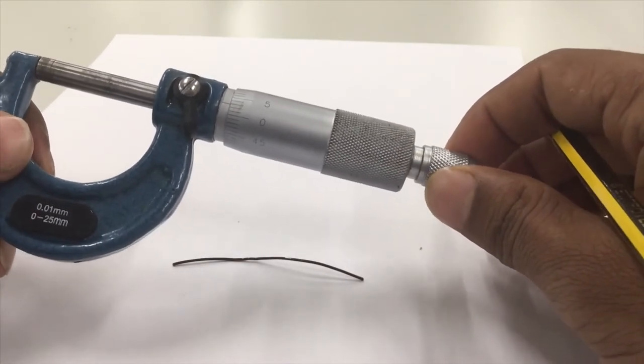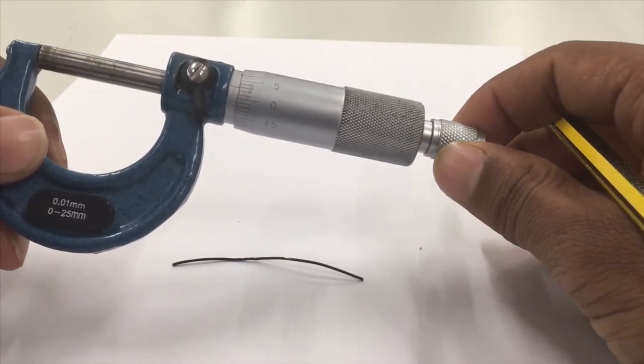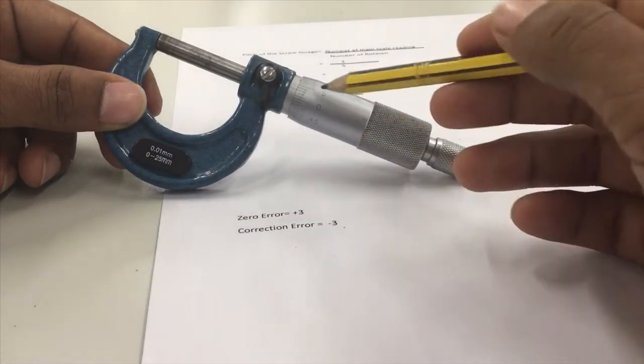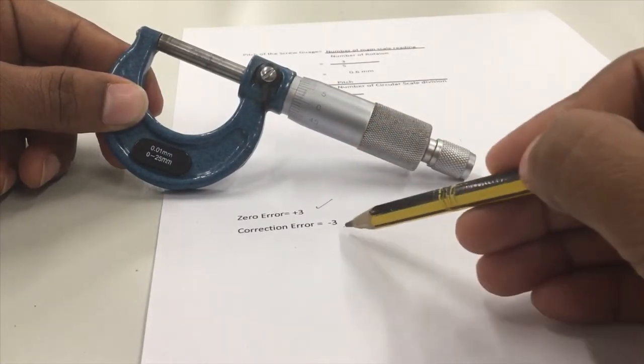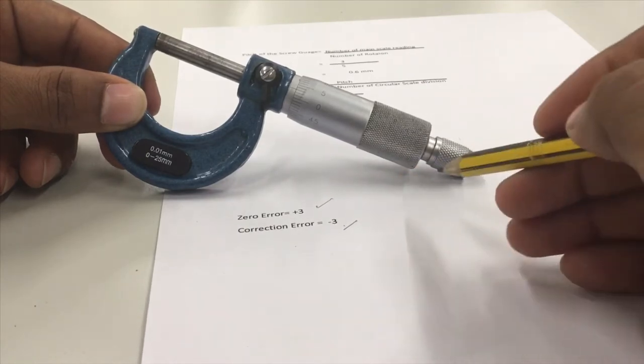So I will be showing you in the table now how to correct the zero errors. As you saw, it has a plus three zero error. So for the correction of this zero error, you have to do minus three. So I will be showing you how to use this in a table later on.